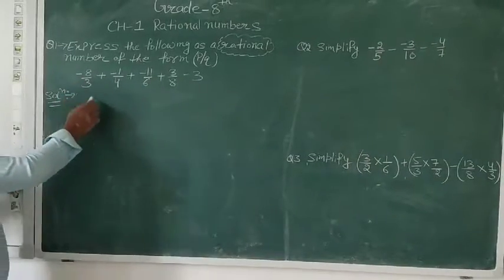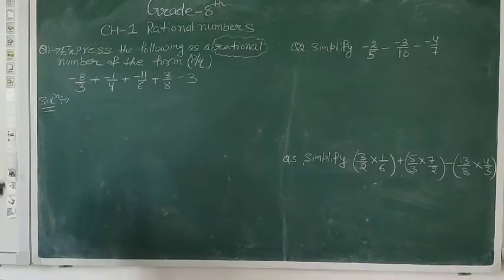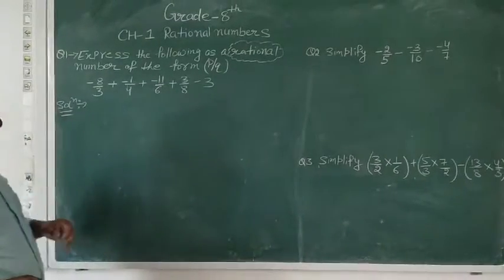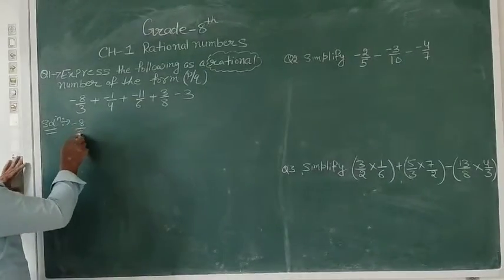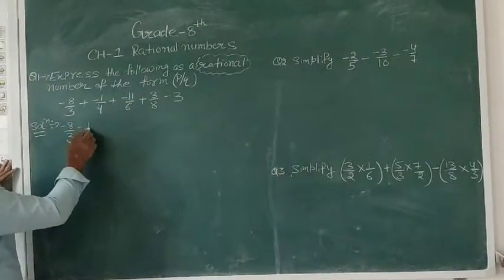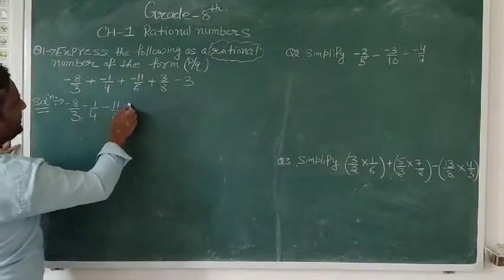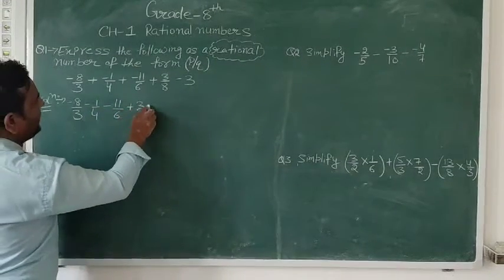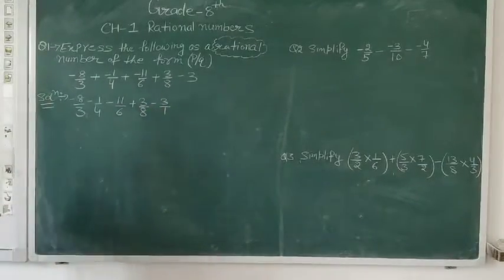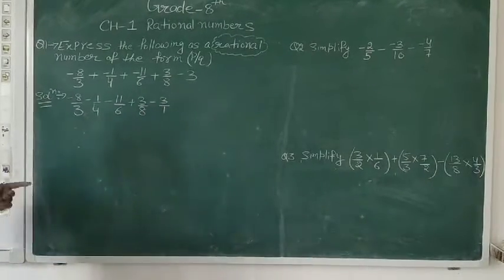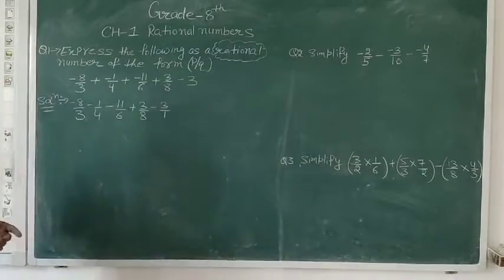The question is: minus 8 upon 3, plus minus 1 upon 4, plus minus 11 upon 6, plus 3 upon 8, minus 3. We rewrite this as: minus 8 upon 3, plus 1 upon 4, plus 11 upon 6, plus 3 upon 8, minus 3 upon 1. We write 3 as 3 upon 1 because dividing by 1 does not affect the original number.